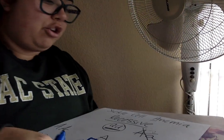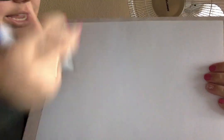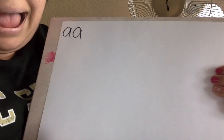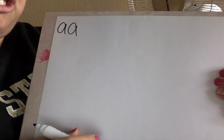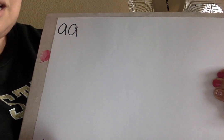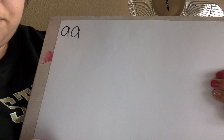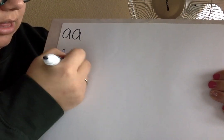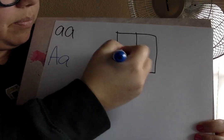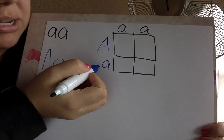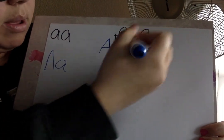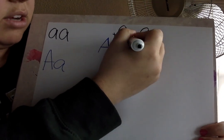Let's look at the next example. We were looking at a person who does have sickle cell anemia — little a, little a — and they're going to have a baby with someone who is a carrier. Think about it: what is the genotype of a person who carries sickle cell anemia but doesn't have it? That would be big A, little a — they're heterozygous. The carrier parent's health is completely normal because they don't actually have the disease. They're not sick with it.